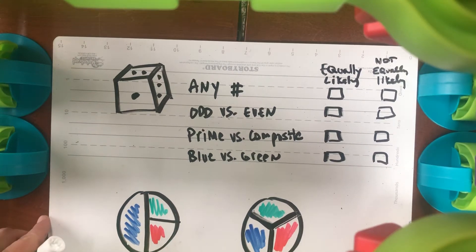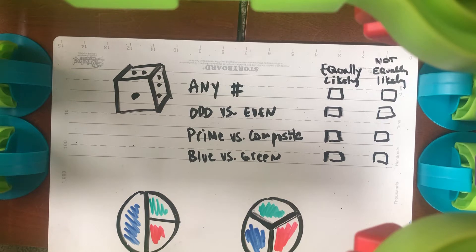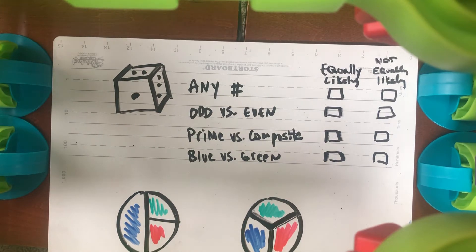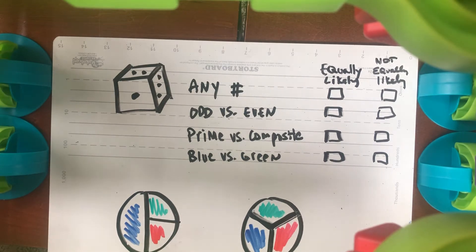In this video, we're going to talk about events that are either equally likely or not equally likely. This has to do with how the trials are conducted in your probability experiment.